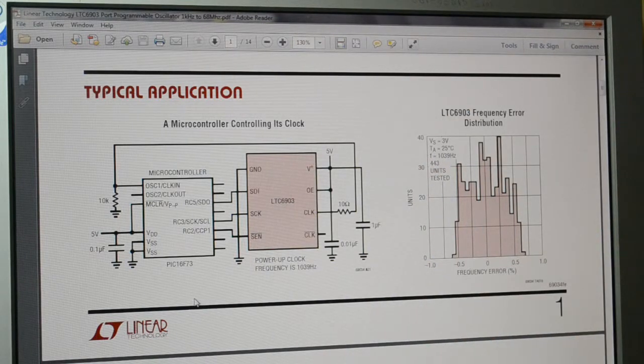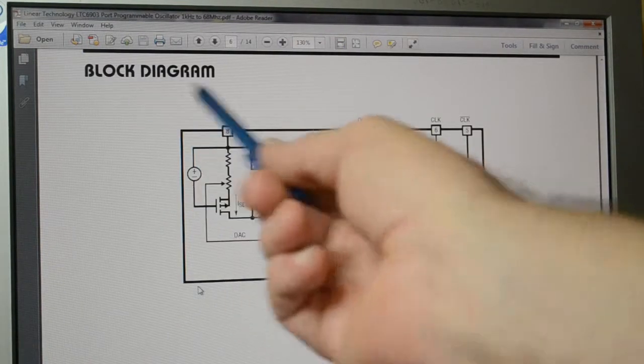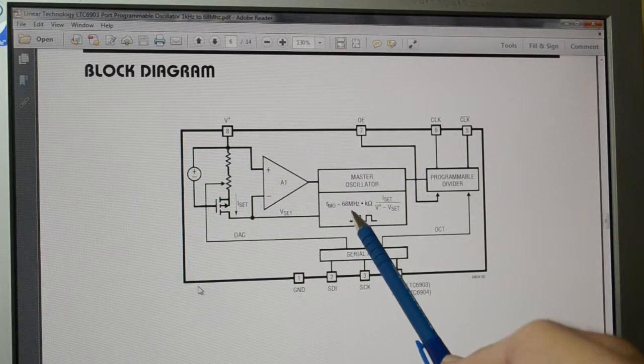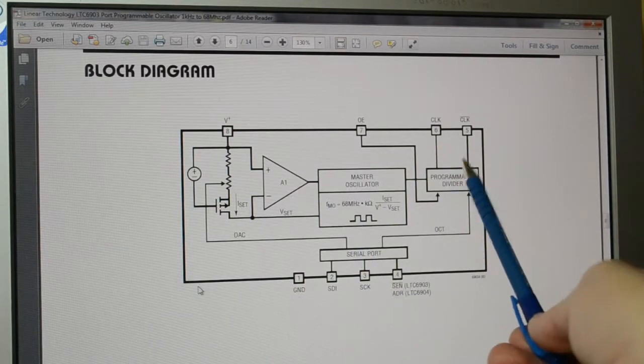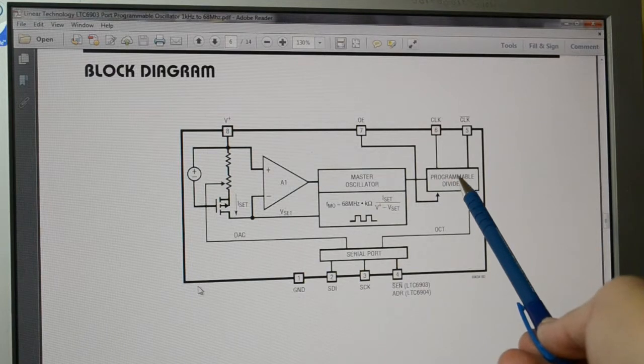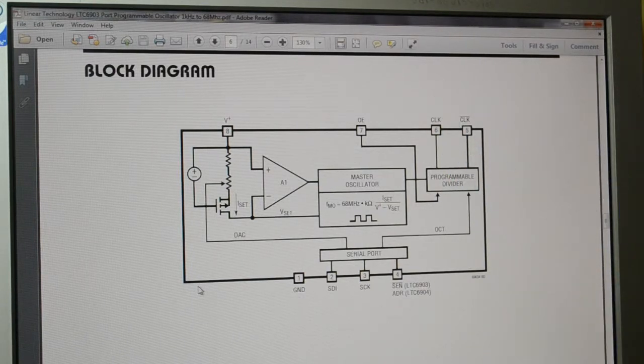So this is the basic block diagram. As you can see, it's essentially a 68 MHz oscillator, and you're dividing the clock down using the SPI.